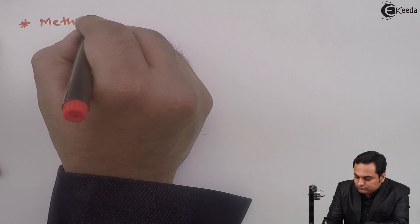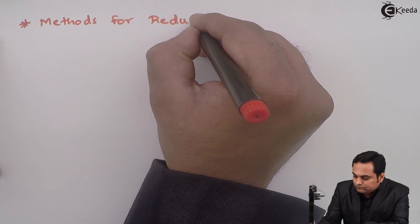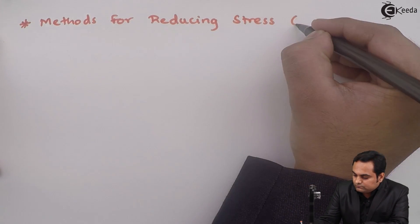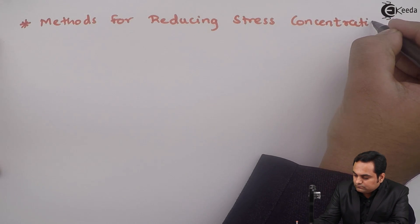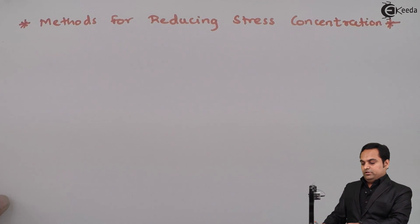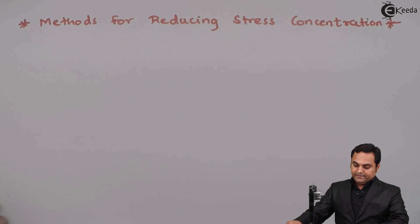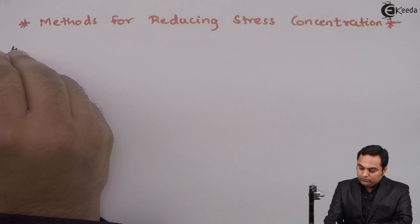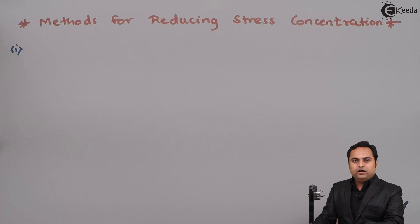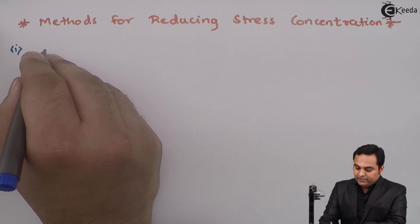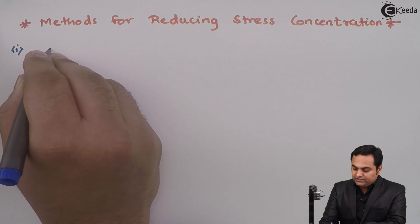Hello friends, in this video we are going to see the methods for reducing stress concentration. The method used for stress concentration can be explained with a diagram. Suppose we have a material or an object in which the area changes suddenly.